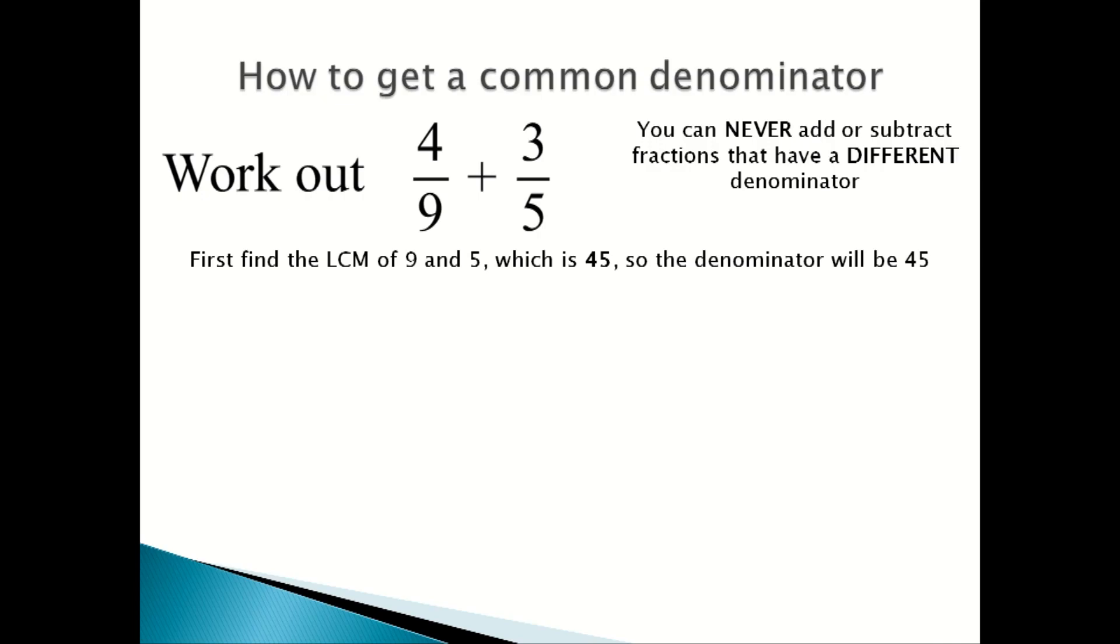First you need to find the lowest common multiple, or the LCM, of 9 and 5, which is 45. So the denominator of the fractions will be 45.